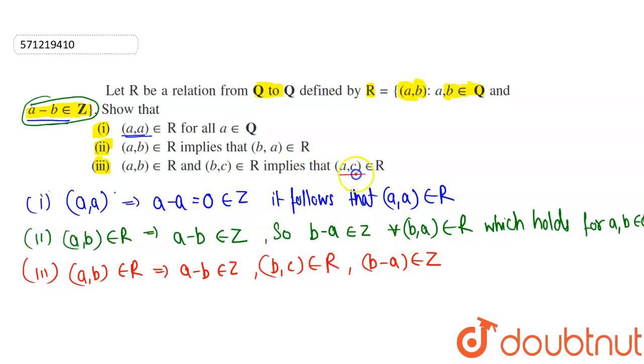We have to check whether this statement holds or not. That means we need to verify if (a,c) ∈ R. For (a,c), a-c must be an integer.